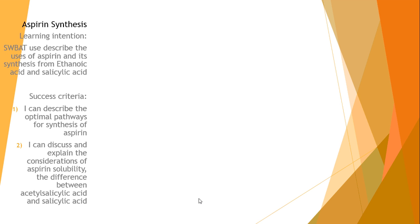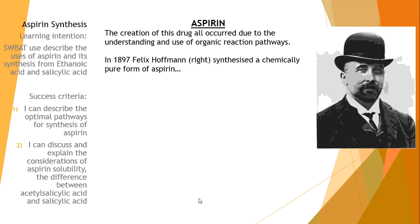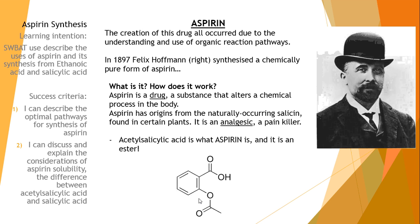So we're going to look at aspirin synthesis and what is it? Well, aspirin is a drug, which you probably know, and the creation of this drug all occurred due to the understanding and use of organic reaction pathways. In 1897, Felix Hoffman, the German guy, the guy on the right there, was the first guy to synthesize a chemically pure form of aspirin. And as I've mentioned before, what is it and how does it work?